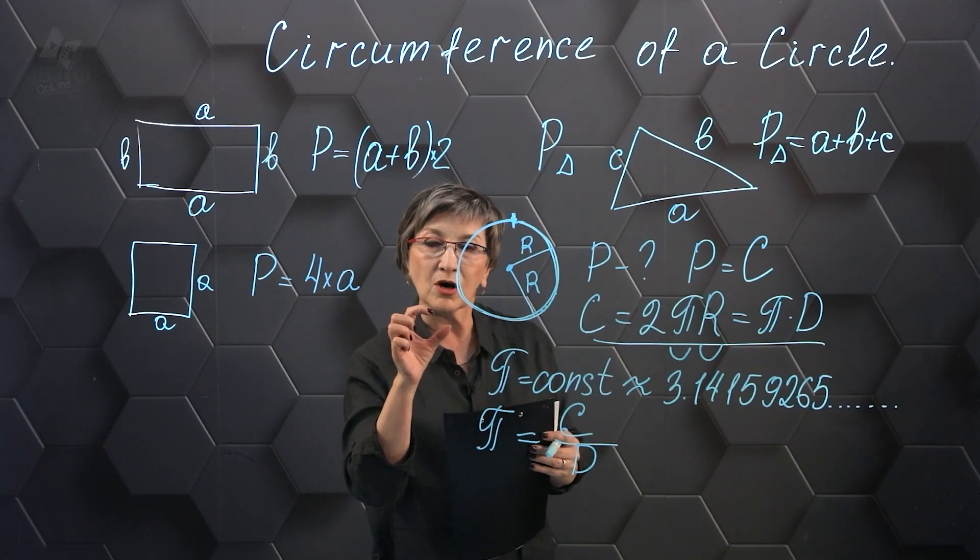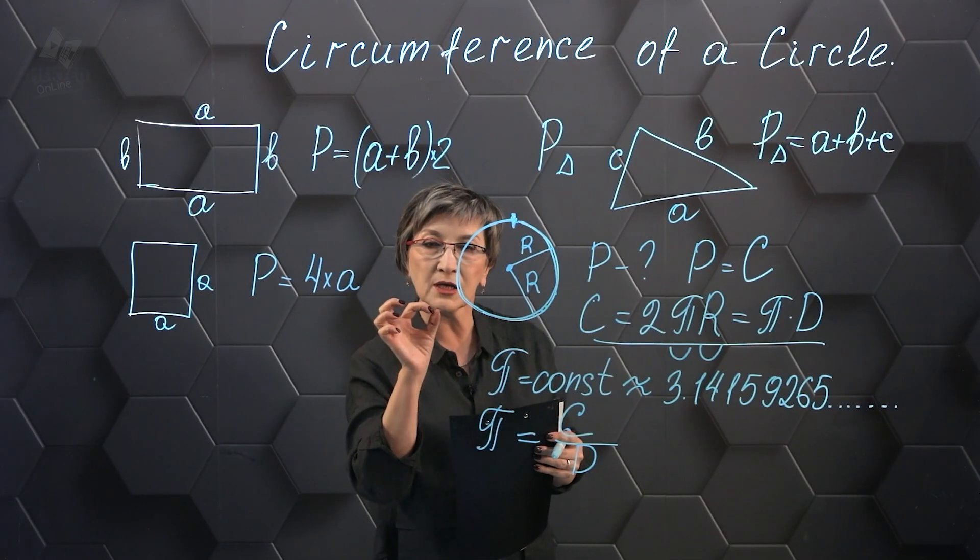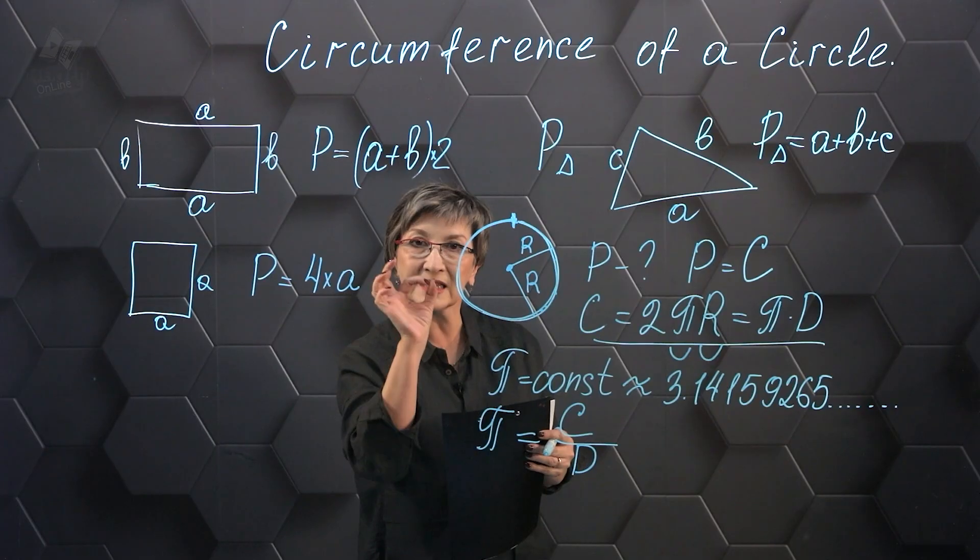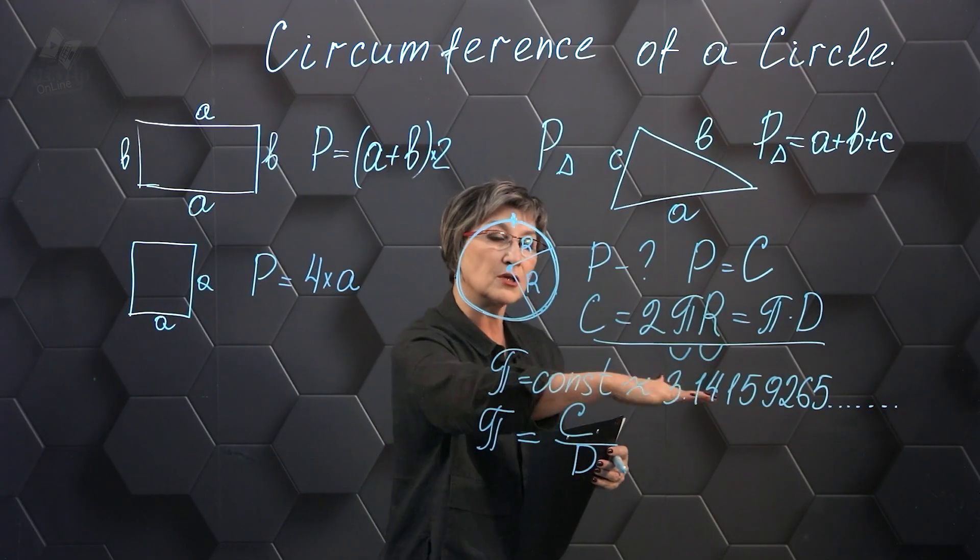If I take a small circle and count the length of that circle and also divide by the diameter of that small circle, I also get that number.